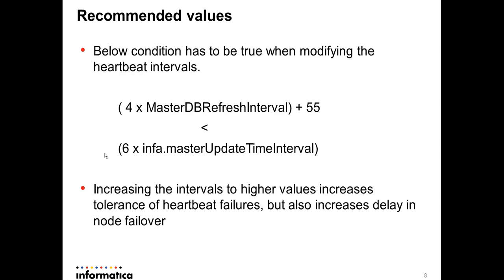Also note that when you increase heartbeat intervals, you get better tolerance for heartbeat failures — for example, if there is a network outage lasting 30 seconds, increasing these intervals gives more tolerance for such intermittent failures. However, increasing these timeouts also means a delay in failover when a node truly goes down and needs to fail over to another node.